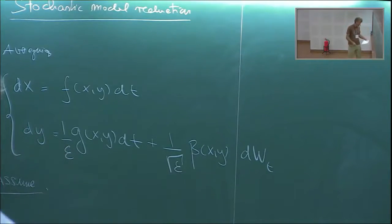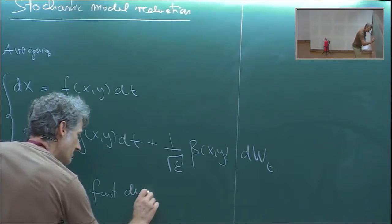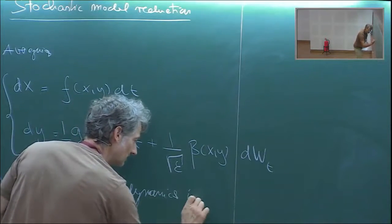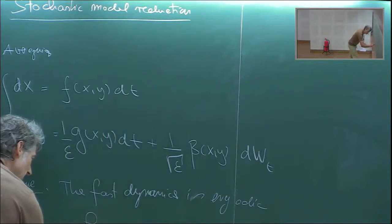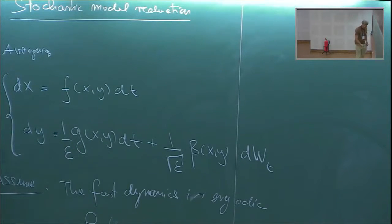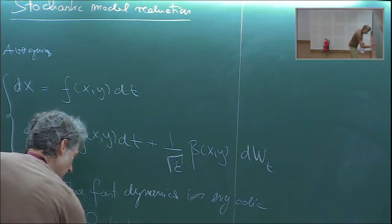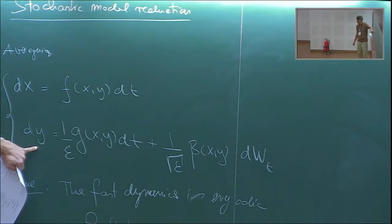We assume that the fast dynamics is ergodic, and we have some measure ρ∞(y | x), conditioned on x, associated with the fast dynamics.